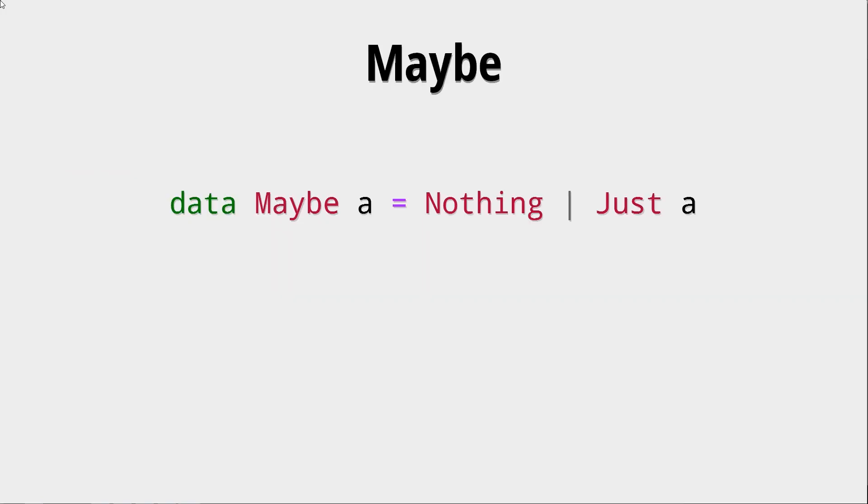This video is on the Maybe data type. Maybe is not a remarkable data type. It has one polymorphic type A and consists of two constructors, Nothing and Just.